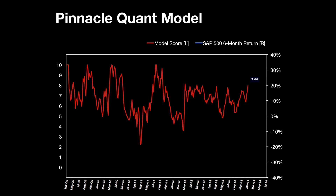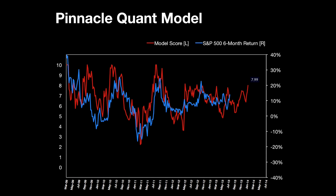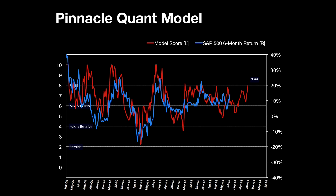Looking at a line chart of the model, the red line represents the model scaled from 0 to 10, where higher is more bullish and lower scores are more bearish. The blue line represents the S&P 500 return over the following six months. Dividing the range into five brackets, you can see that lately the red line has been in the second highest bracket, which we call mildly bullish.